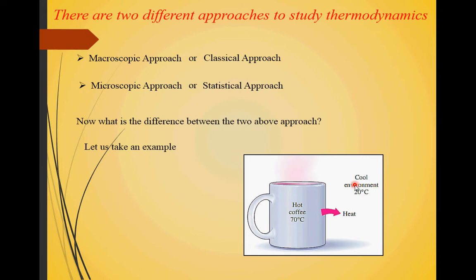If you ask what is the temperature of the coffee after 10 minutes, you take a thermometer, dip it inside the coffee, take the reading, and you have the temperature. What we have done here is the macroscopic or classical approach — because you are considering the substance inside as a bulk. You are not considering molecular-level activity and not studying individual molecules at a time. In the microscopic or statistical approach, you would calculate the temperature of each and every molecule in the system, sum them up, and get almost the same value.